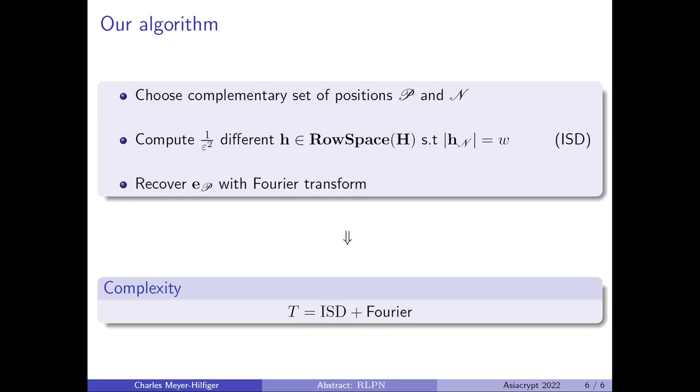Our algorithm: We choose complementary set of positions, P and N. We compute 1 over epsilon squared different h, such that h_N is of weight W. This is done using techniques taken from the ISDs. And then, we recover e_P with Fourier transform.